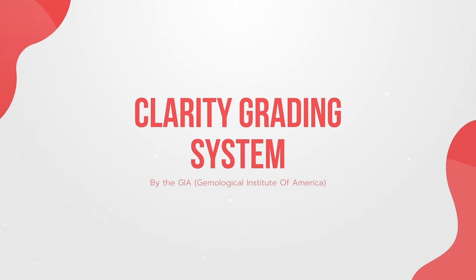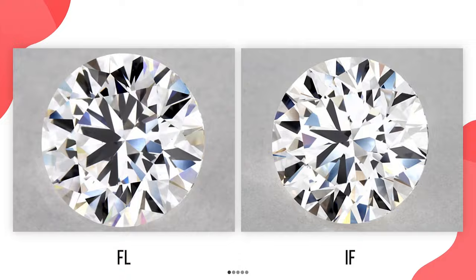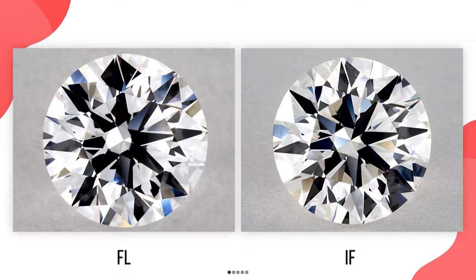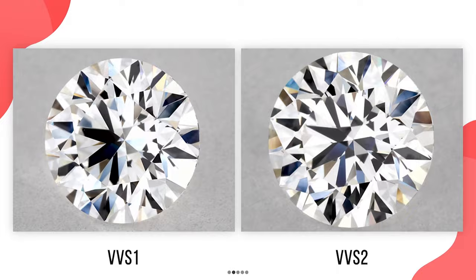As we move up through the grades, we'll see fewer inclusions and blemishes, but of course the price goes up. The first group is FL and IF diamonds — flawless diamonds with no inclusions or blemishes visible under 10x magnification. The following group is VVS1 and VVS2 diamonds, which stand for Very Very Slightly Included level 1 and level 2. No inclusions are visible, but some small blemishes may be visible under 10x magnification.